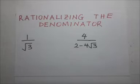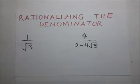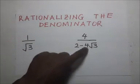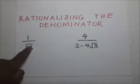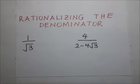Today we get to learn how to rationalize the denominator. This is Kisenbo Academy — thanks for tuning in. Rationalizing the denominator simply means that when given a fraction such as 1 over root 3, or a fraction like 4 over 2 minus 4 root 3, we can make the denominator a rational number. The process of making the denominator a rational number is what we call rationalizing the denominator.